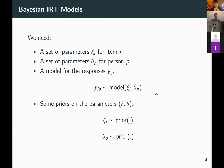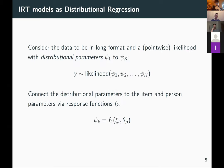One important aspect is that we typically specify priors on person and item parameters independently — not joint priors between item and person parameters, though such applications would certainly exist. Now let's write IRT models in terms of regression models in order to fit them in BRMS.